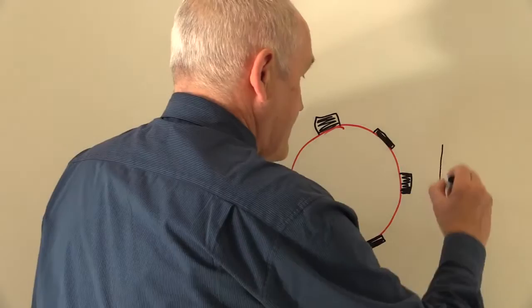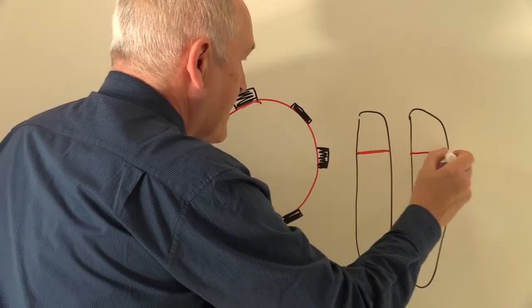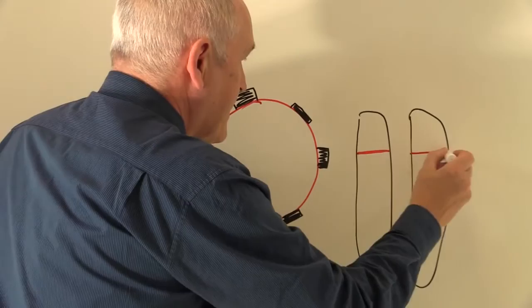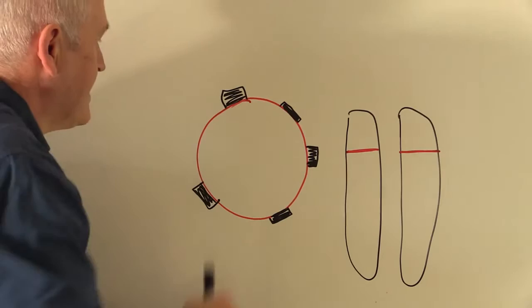So here we have a diagrammatic representation of the chromosome number ones. We have a homologous pair of chromosomes, and the Rhesus factor is going to occupy one of the positions on that chromosome. So this gene in this position contains the genetic information required to synthesise the proteinaceous Rhesus factor.